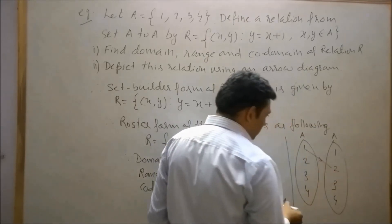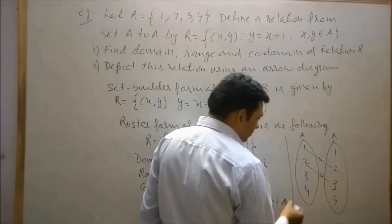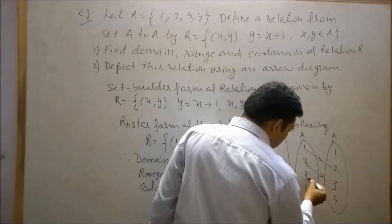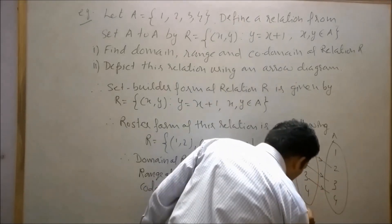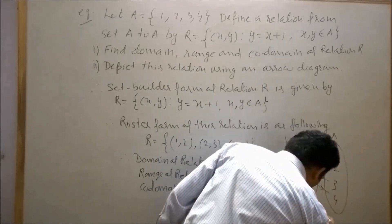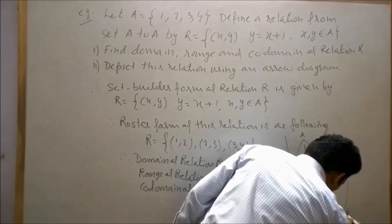1 is related to 2, 2 is related to number 3, and 3 is related to number 4. So this is arrow diagram of R.